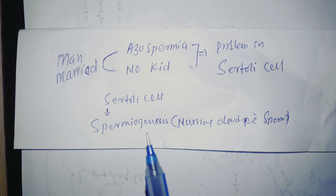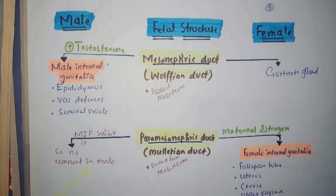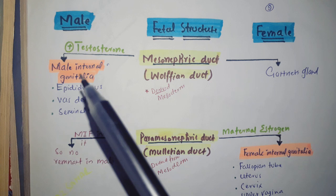The function of testosterone is that it helps in the formation of male internal genitalia from the Wolffian duct, which is also called mesonephric duct. The male internal genitalia are epididymis, vas deferens, and seminal vesicles.